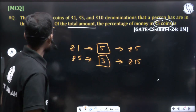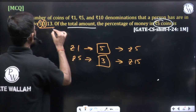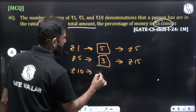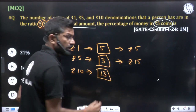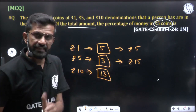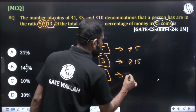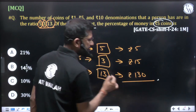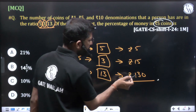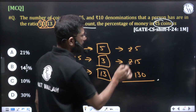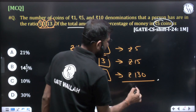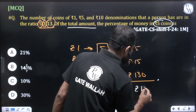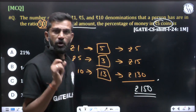Now for ₹10 coins, we have 13 coins, so 13 coins of ₹10 will generate ₹130. The total amount is ₹130 + ₹15 + ₹5, which equals ₹150. So the total money we are having is ₹150.